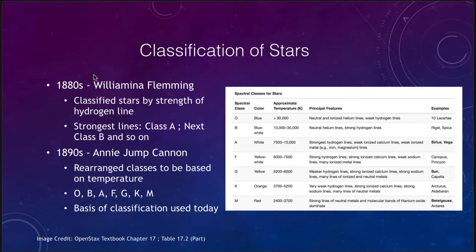Now let's look at how these were classified. They were originally classified by Wilhelmina Fleming back in the 1880s. The first thing she looked at was the hydrogen line, which was the most prominent line in many stars. She said the strongest hydrogen lines were class A, then class B, and so on down through the alphabet to very weak hydrogen lines which would have been class M or so.